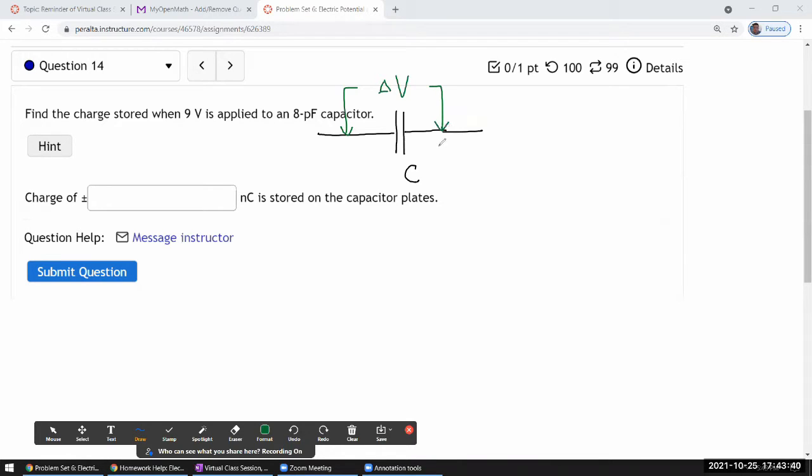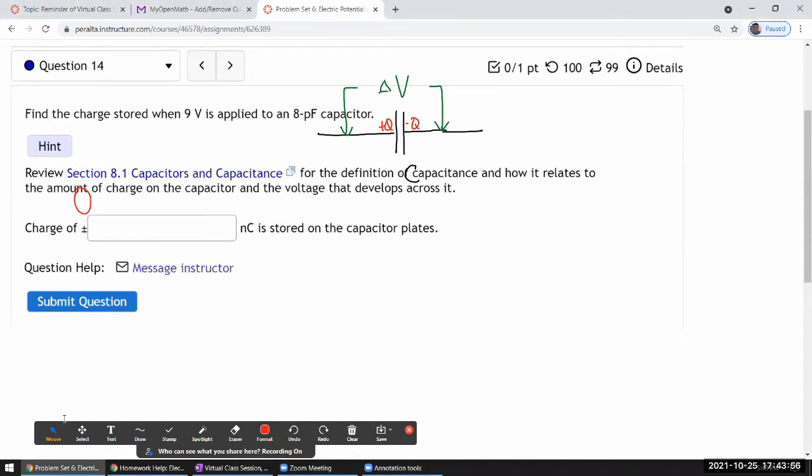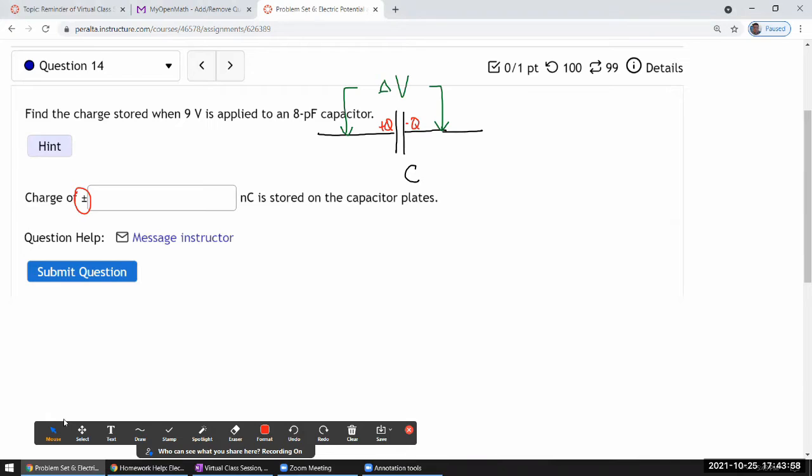And then they are asking you for the amount of charge that's stored on the capacitor. Plus Q on one, minus Q on the other. That's why there's a plus minus symbol here. So as you're looking at it, the hint will tell you use the definition of capacitance. So that's what I'm going to use.